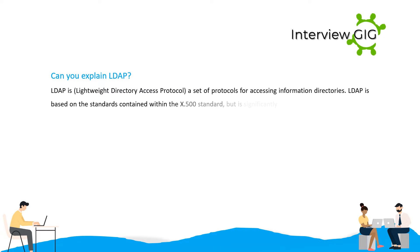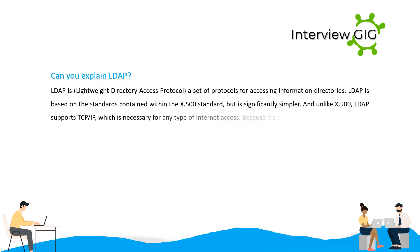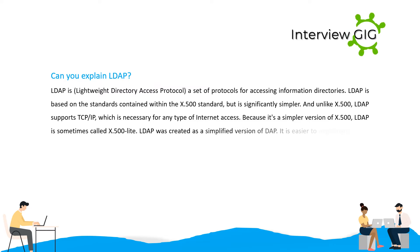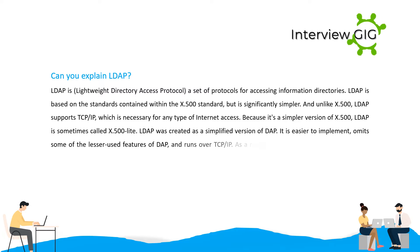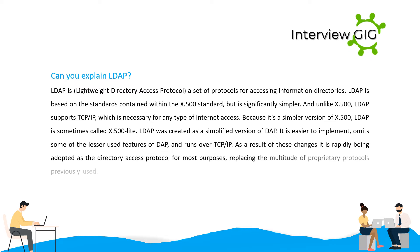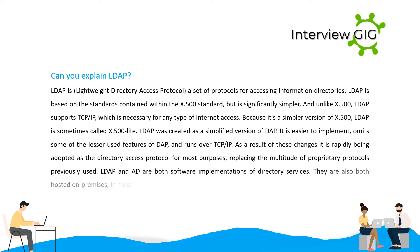LDAP is based on the standards contained within the X.500 standard, but is significantly simpler. And unlike X.500, LDAP supports TCP/IP, which is necessary for any type of internet access. Because it's a simpler version of X.500, LDAP is sometimes called X.500 Lite. LDAP was created as a simplified version of DAP. It is easier to implement, omits some of the lesser-used features of DAP, and runs over TCP/IP. As a result, it is rapidly being adopted as the directory access protocol for most purposes, replacing the multitude of proprietary protocols previously used.